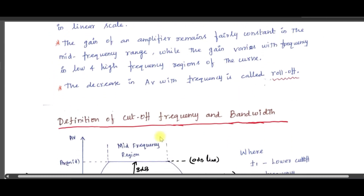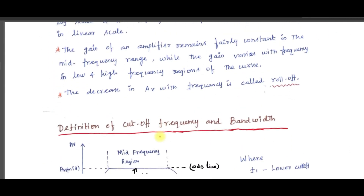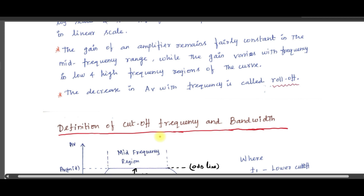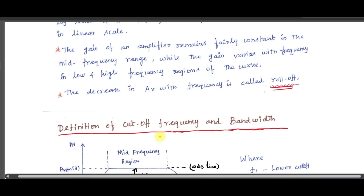The areas where the gain is dropping are called roll-off areas. There are two roll-off areas: one from mid-frequency towards lower frequency zero, where the gain is dropping, and another from mid-frequency towards higher frequency, where the gain is also dropping.